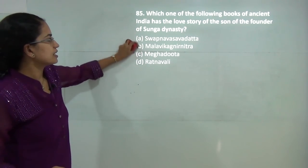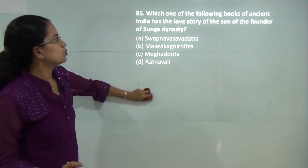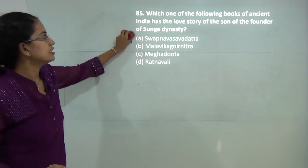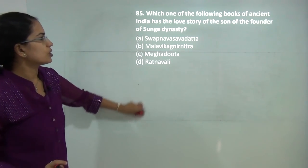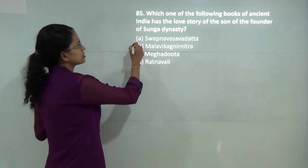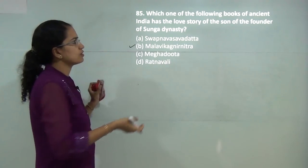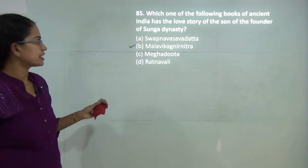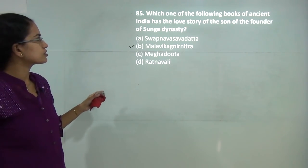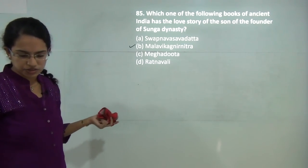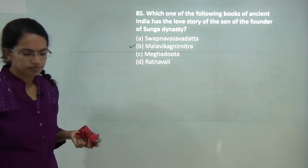Malavikagnimitra is the correct answer here. It was the love story of the son of the founder of the Shunga dynasty. So B would be the correct answer. This is again a direct question from history.